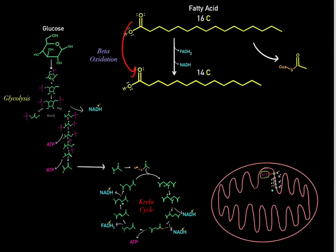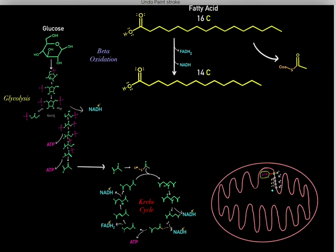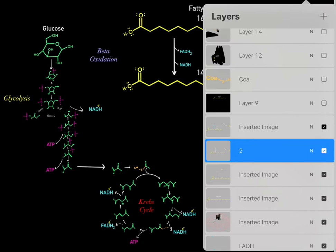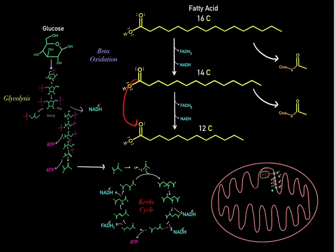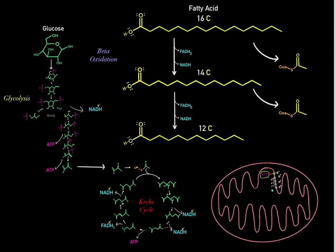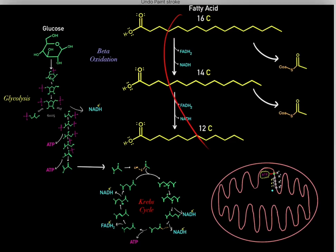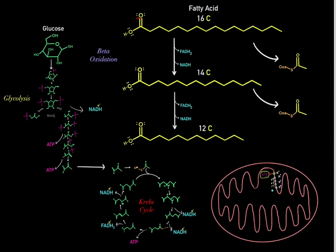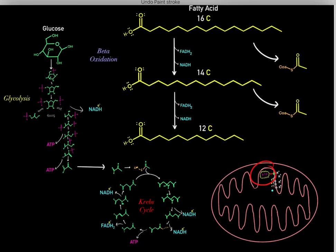Each round of beta-oxidation loses two carbons: we go from 16 to 14 carbons, then can do another round going from 14 to 12 carbons, losing those two carbons in the form of acetyl-CoA. We also create reduced cofactors each round, which fuel the electron transport chain to create ATP. That is how we use free fatty acids to produce ATP.